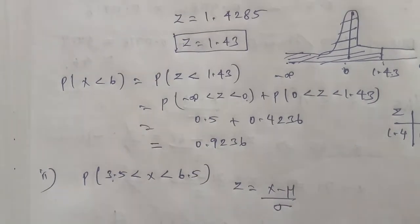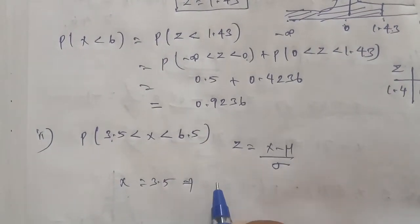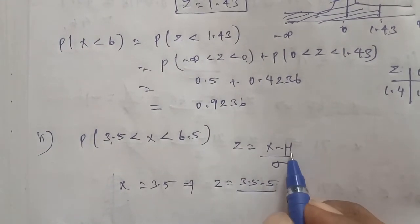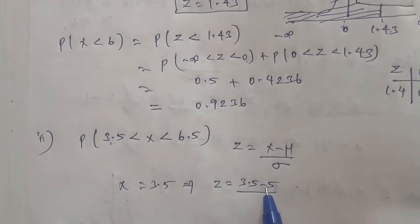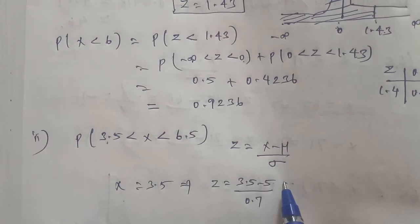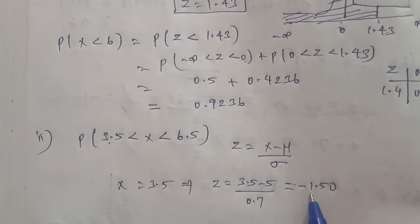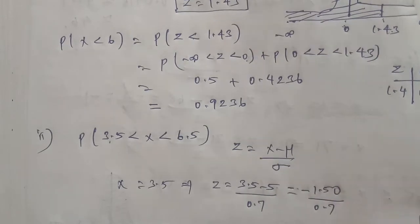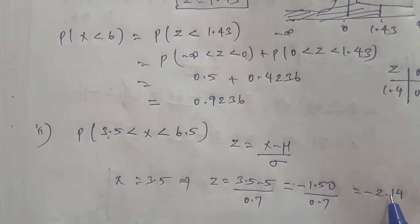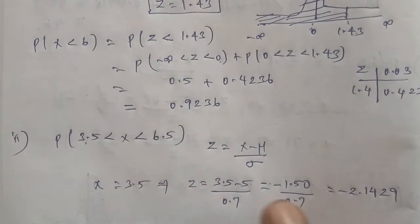For X = 3.5, we calculate Z = (3.5 - 5) / 0.7. The new value is 5 and sigma value is 0.7. So 3.5 minus 5 gives us minus 1.50. Dividing -1.50 by 0.7 gives Z = -2.1429, which we can write as Z = -2.14. So X = 3.5 gives the answer Z = -2.14.